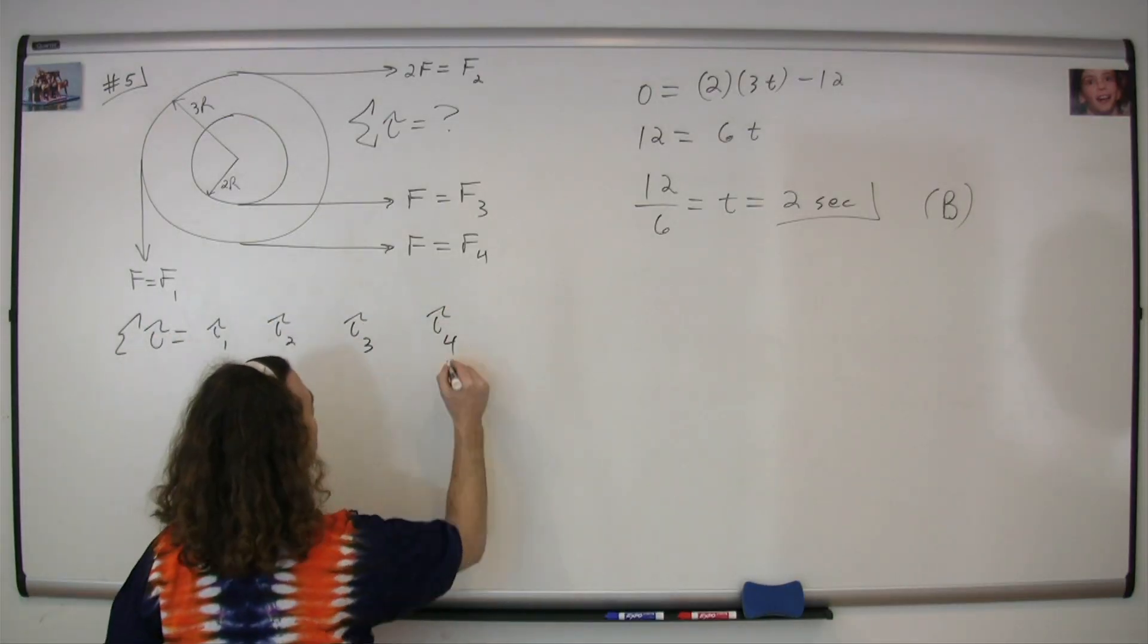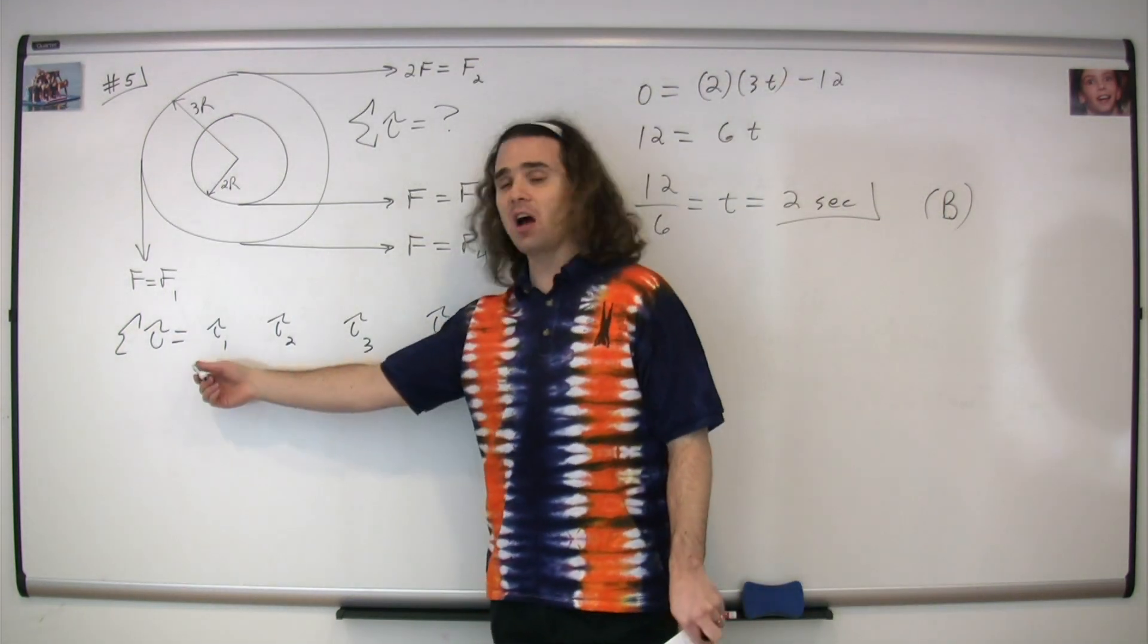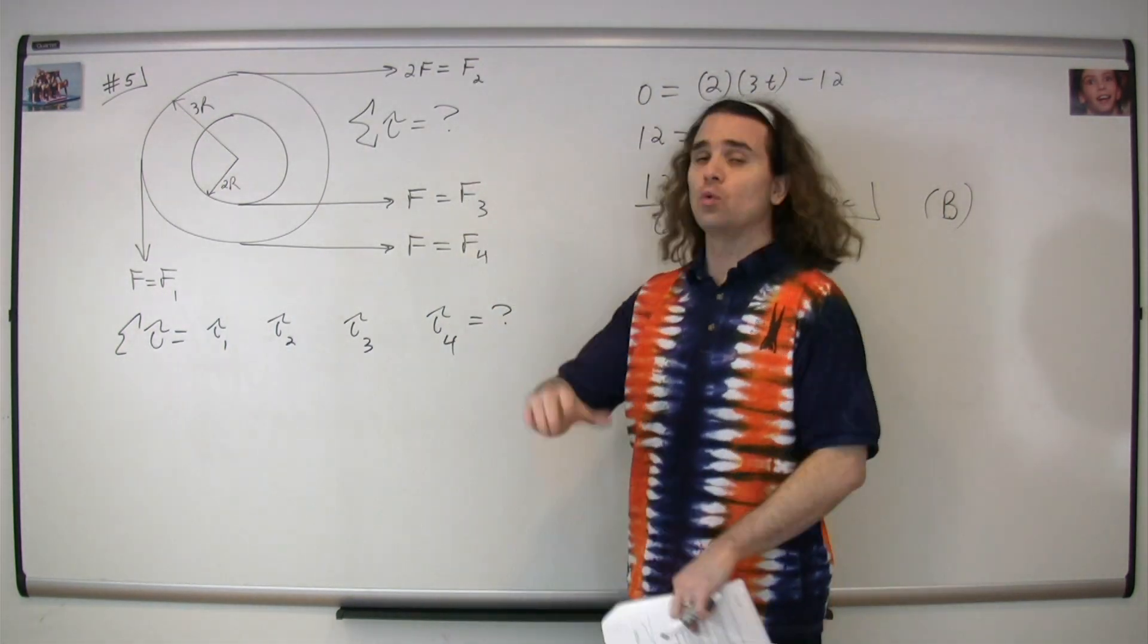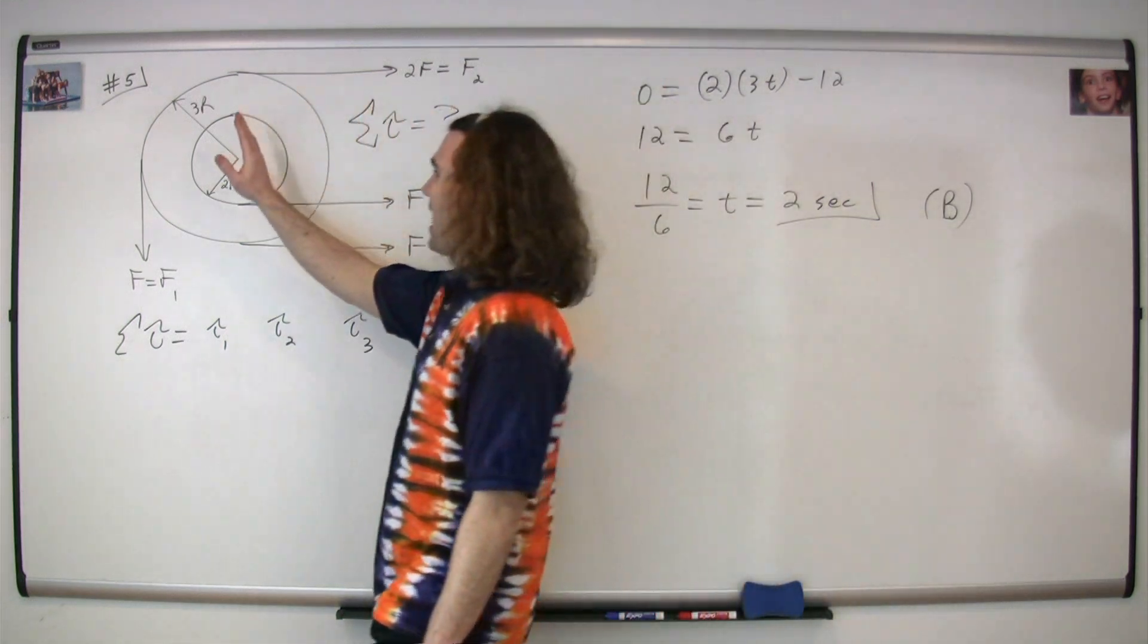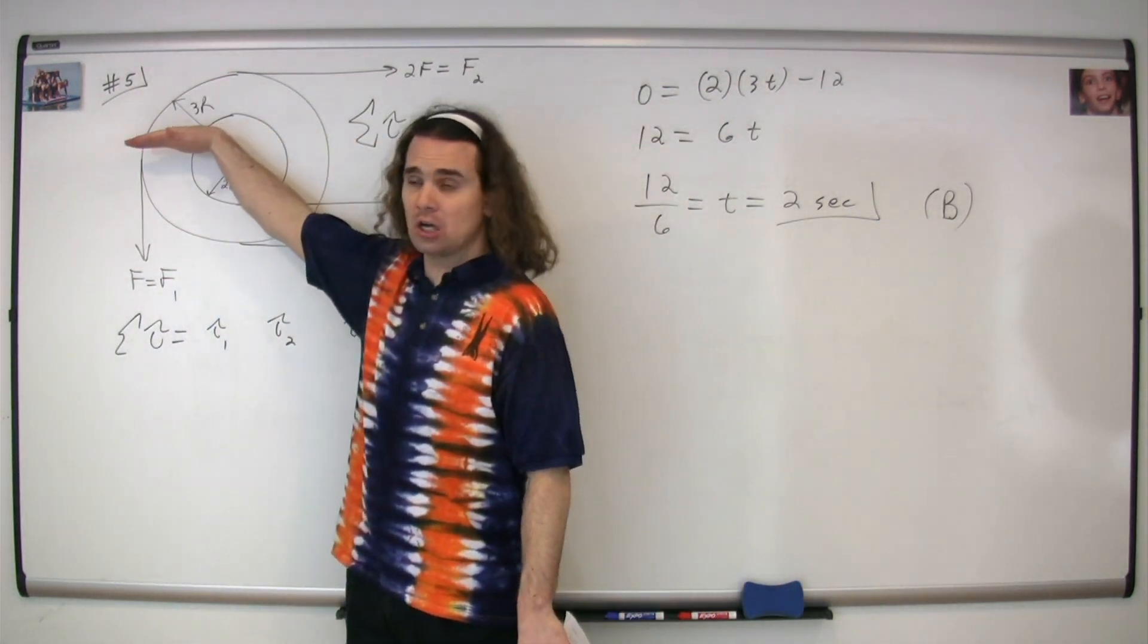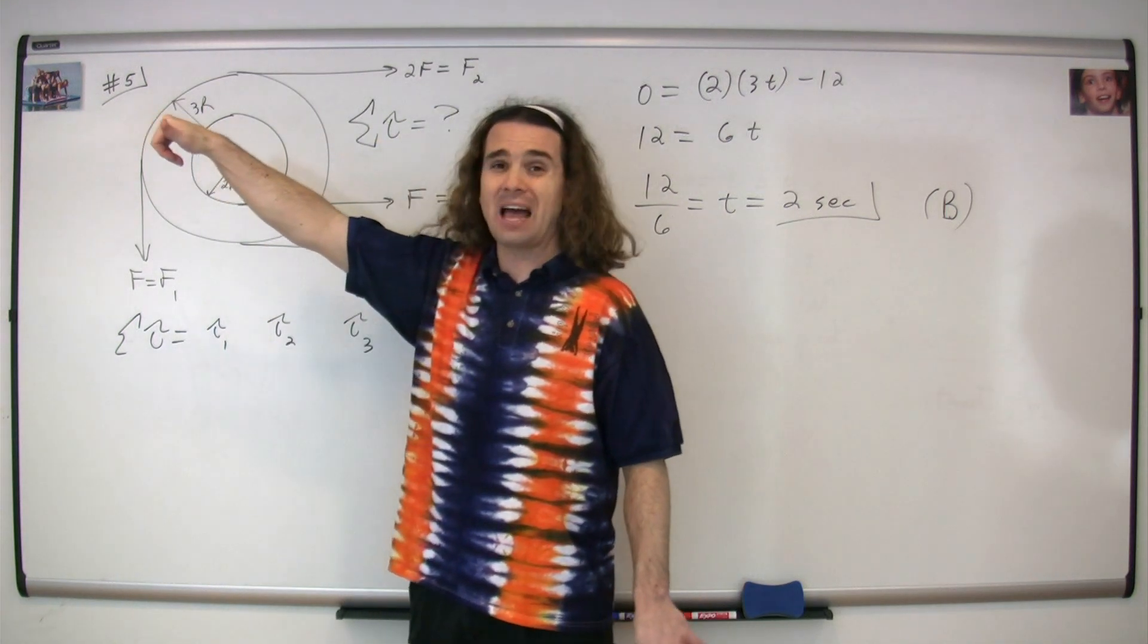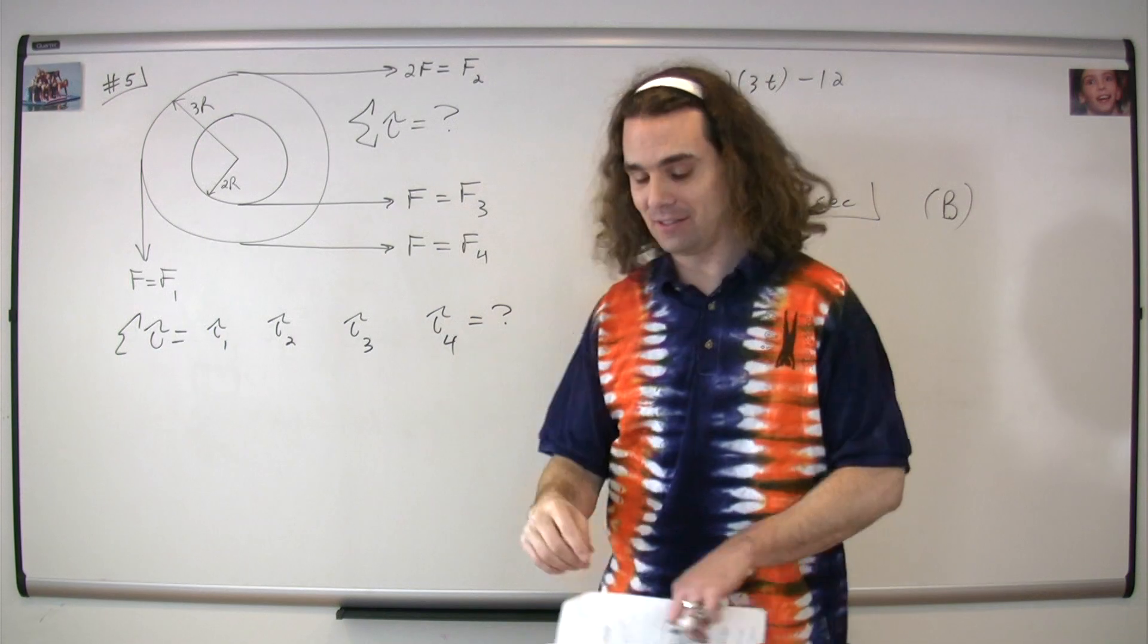So we're going to use the right hand rule to figure out the directions of our four torques. We start with our fingers at the axis of rotation for number one. We point our fingers along the lever arm and then we curl our fingers in the direction of the force. Our thumb points out of the board, which is positive.